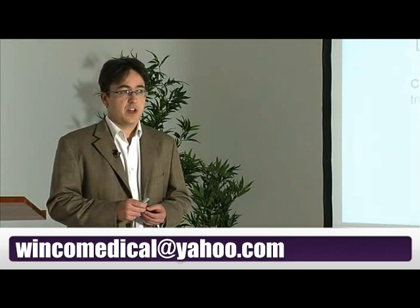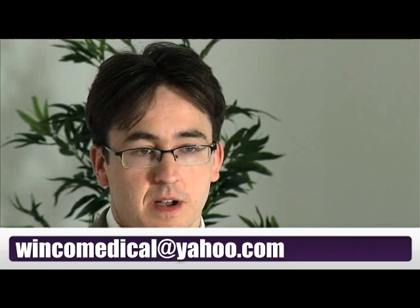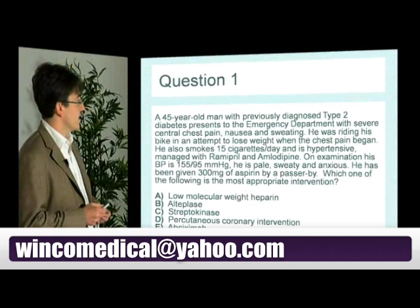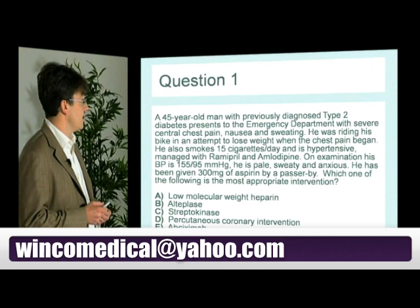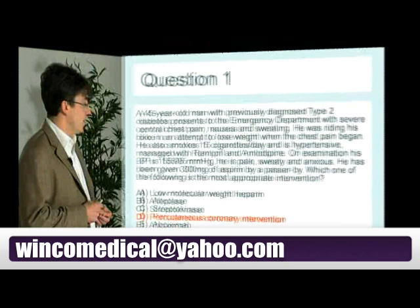The basis of this lecture is a question series — I'll give you an opportunity to go through each of the multiple choice stems and then explain the answers with accompanying slides. So question one: a 45-year-old man with previously diagnosed type 2 diabetes presents to the emergency department with severe central pain, nausea and sweating. He has several risk factors. What's the most appropriate intervention? The correct answer is D — percutaneous coronary intervention.